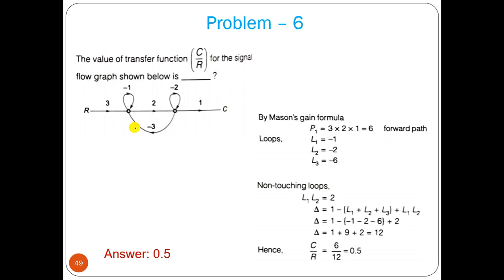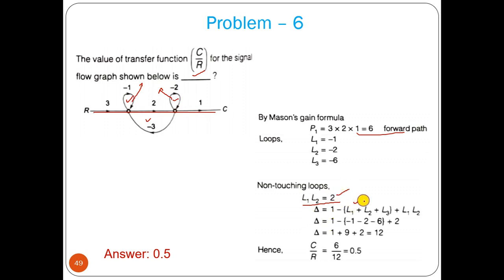Another problem: one forward path, three loops including a self-loop. Forward path gain = 3*2*1 = 6. L1 = −1, L2 = −2, L3 = −6. L1 and L2 are non-touching. So delta = 1 − (−1 −2 −6) + (−1)*(−2) = 1 + 1 + 2 + 6 + 2. Delta1 = 1 since all loops touch the forward path. Transfer function C/R = 6/delta.